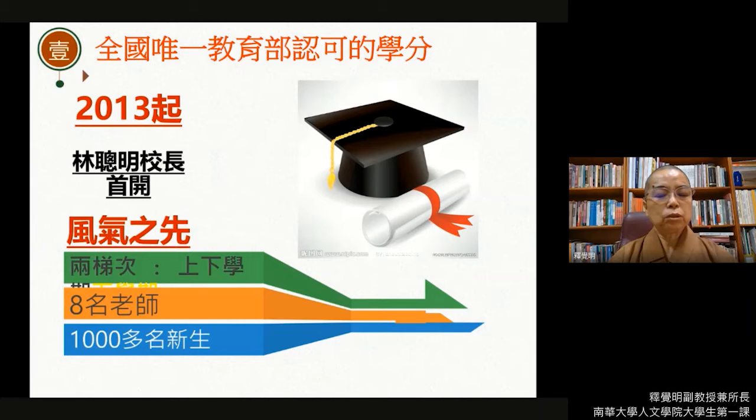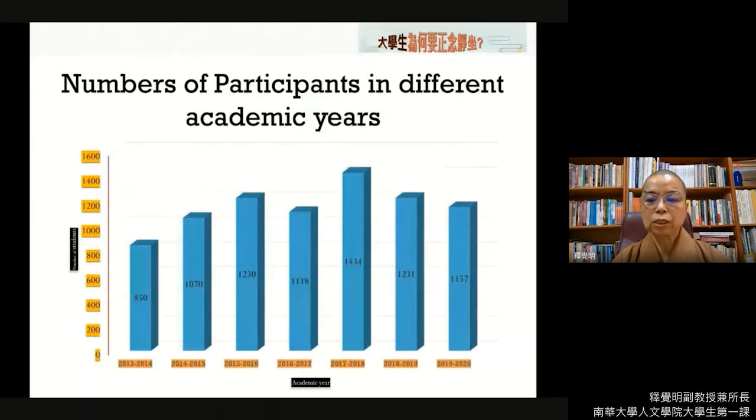那就成为全国唯一教育部认可的一个学分。我们的大一的新生有1000多名的学生，那由于师资只有8名，所以场地也有限制，因此将学生分成两个梯次，依照科系来分班，所以总共每一个学期将有500多个学生，在每个礼拜三的第六节以及第七节的这个时间，同步学习正念静坐的课程。那么从2013年开始一直到2020年的一个统计的学生学习的数字，从这一个表可以看得出来。